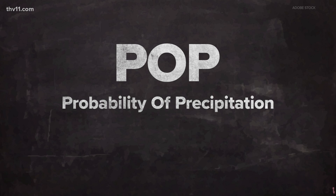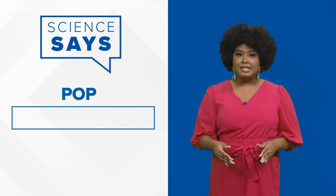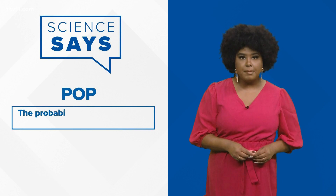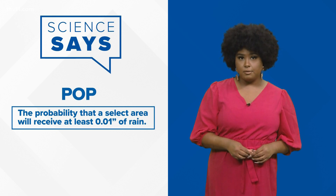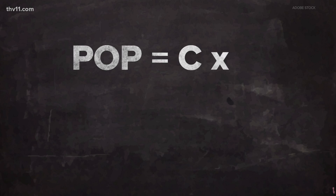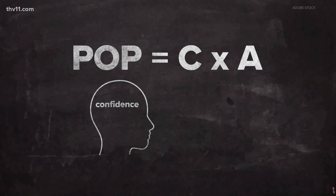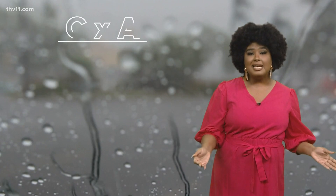The POP represents both confidence and area, and it is defined as the probability that a select area will receive at least 0.01 inches of rain. The formula POP equals C times A is used to express percentages, where the variable C represents the confidence that precipitation will occur somewhere in the forecast area, and variable A represents the percent of the area that will receive measurable precipitation.